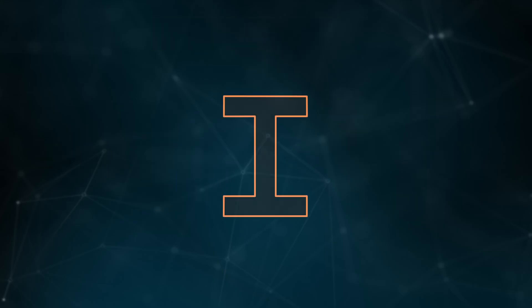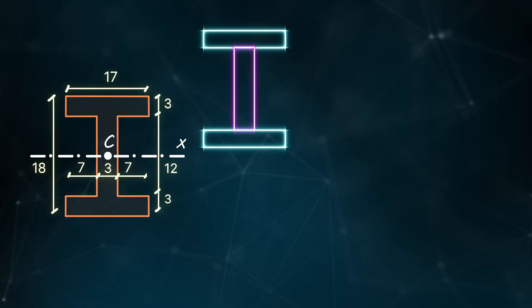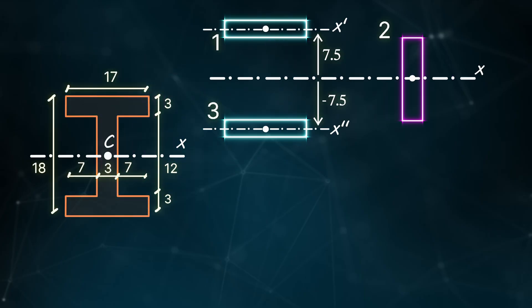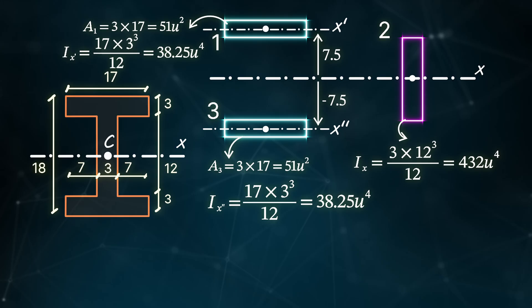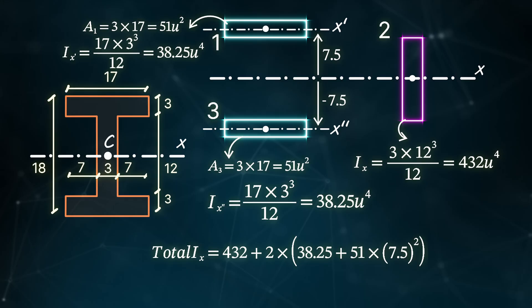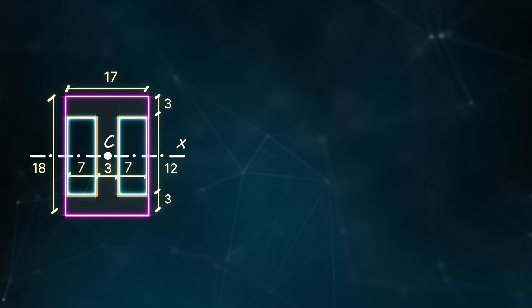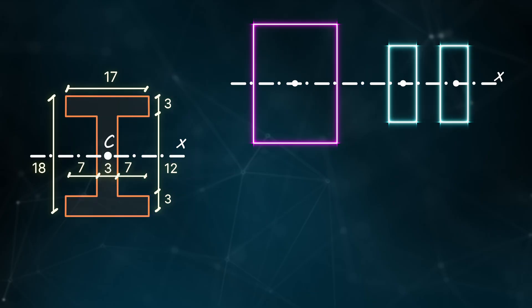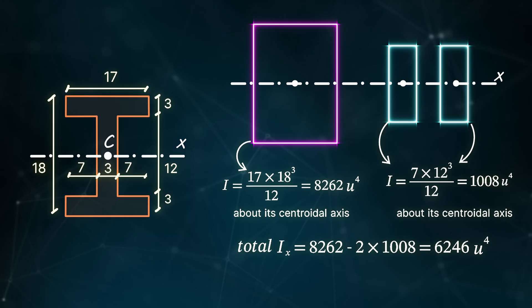The parallel axis theorem also allows us to compute the area moment of inertia for complex geometries composed of simple shapes. For an I-shaped cross-section, we calculate the moments of inertia of each rectangular area about its own centroid, then transfer them to the axis of interest using the parallel axis theorem. The total moment of inertia of the I-shaped section is found to be 6246 units to the power of 4. Alternatively, the same result can be obtained by subtracting the moments of the smaller rectangles from that of the large rectangle.